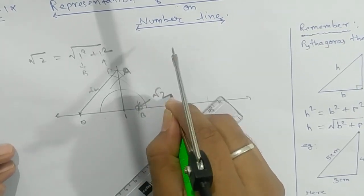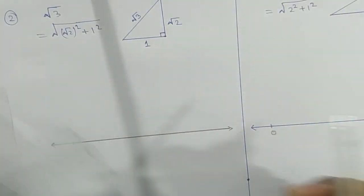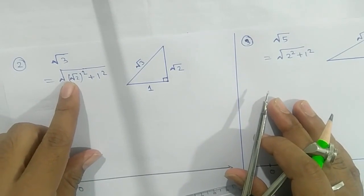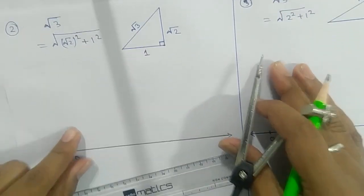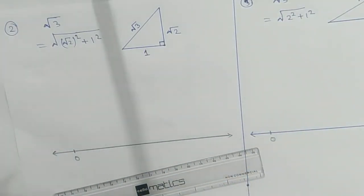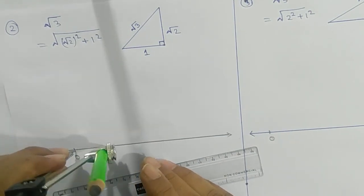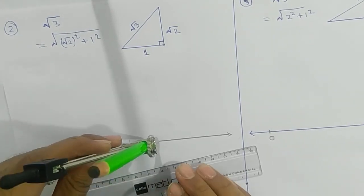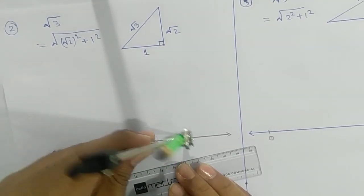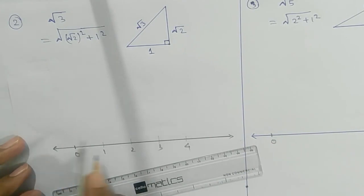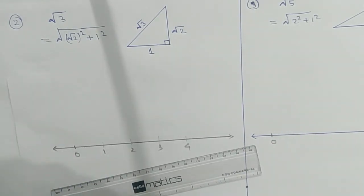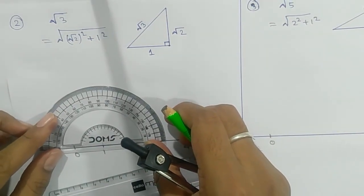Similarly, for root 3: root 3 can be written as (√2)² + 1². So first, your target is to get root 2. Using the same style, take your own arc length — 1, 2, 3, 4. We need root 2 first, so on the unit 1, we need a perpendicular. With the help of a protractor, draw a perpendicular line.